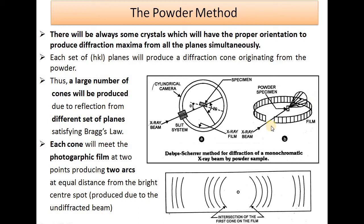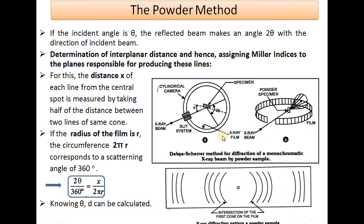When the incident angle is theta, the angle of reflection from the plane is also theta, so the total angle between the incident beam and the reflected beam is equal to 2-theta. The reflected beam makes an angle of 2-theta with the direction of the incident beam.